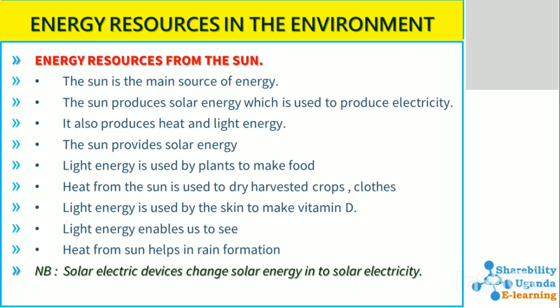Heat from the sun is used to dry harvested crops, clothes, and so on. Light energy is used by the skin to make vitamin D — that morning sunshine between 7 and 8 a.m. is used by the skin to obtain vitamin D. Light energy also allows us to see during the day.